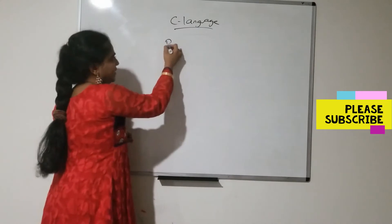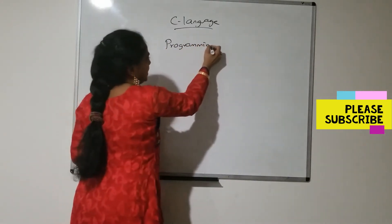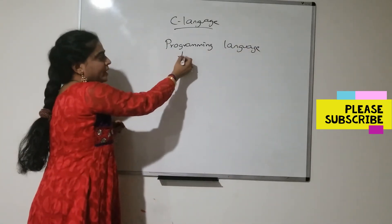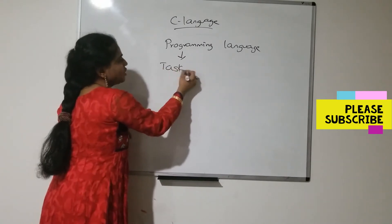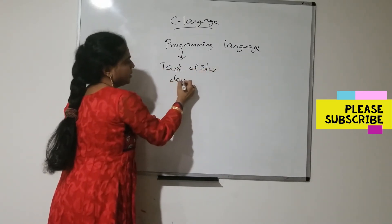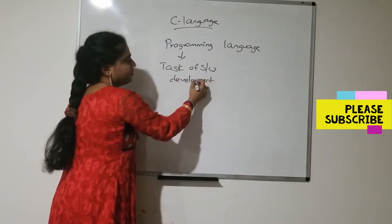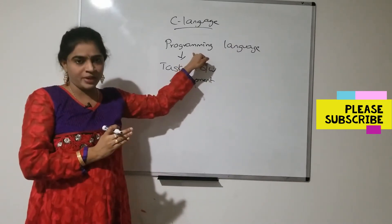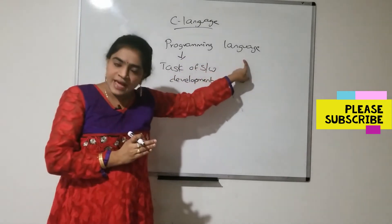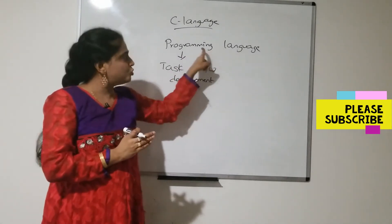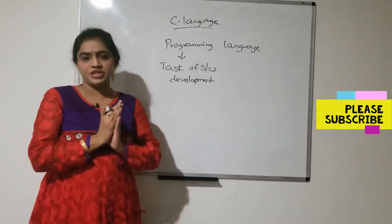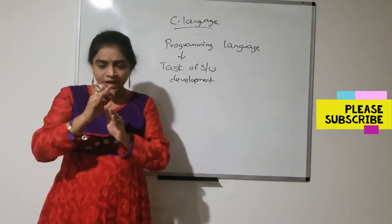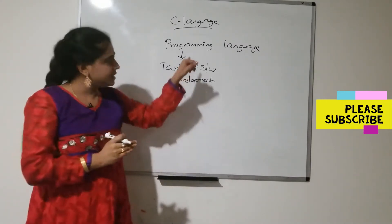C is a programming language. What is meant by programming? Programming is the task of software development — nothing but coding the software. A programming language is the language which is used to write programs. A program is nothing but a set of instructions, and the language you use to write those instructions is called a programming language.